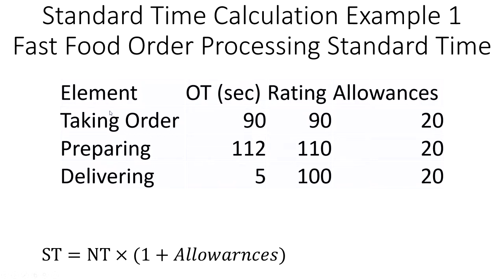These are the different types of rating for each of these elements of the task, and then allowances are 20% of the shift.